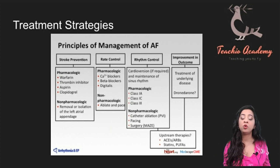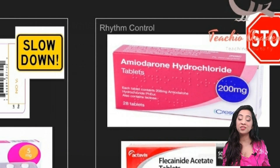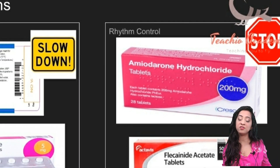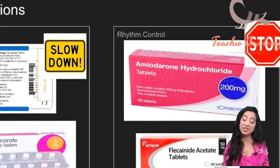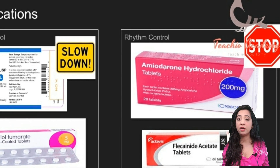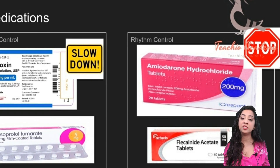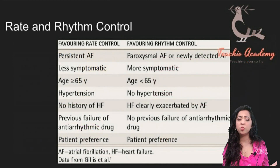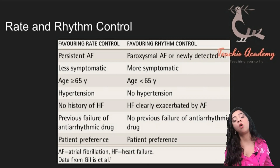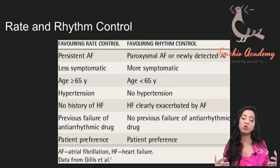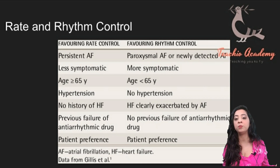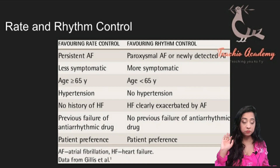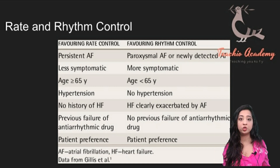Drugs for both vary. For rate control, you're thinking about beta blockers and calcium channel blockers. Remember, if a patient has asthma, don't give them beta blockers, as that will cause bronchiole spasm and exacerbate asthma — give calcium channel blockers instead. For rhythm control, the big player is amiodarone. Make sure you know the side effects of amiodarone for your PLAB 1 exam. Rate control is generally used for patients with a long history of AF. For older patients over 65, we prefer rate control versus rhythm control because rhythm control drugs have a lot of side effects.